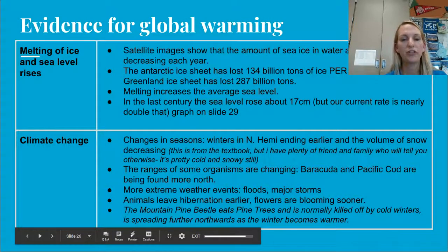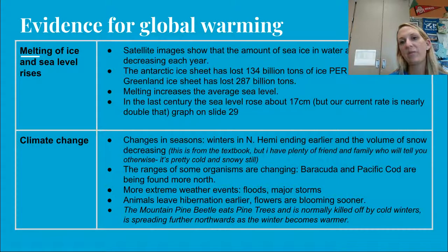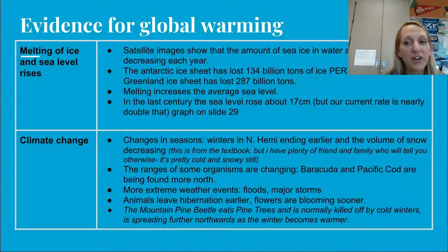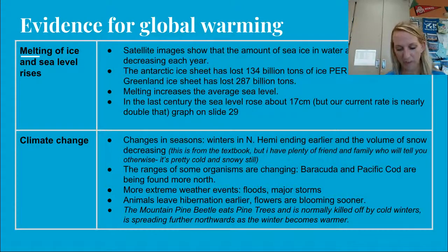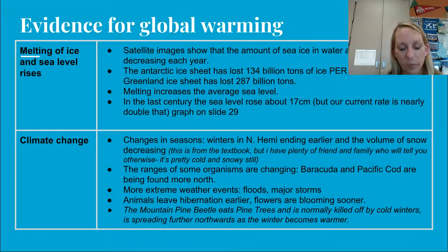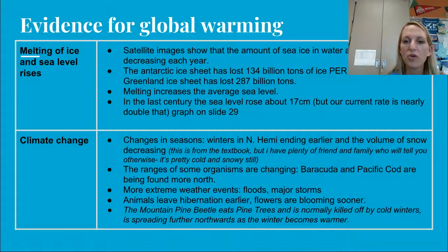The last evidence for global warming is climate change: winters in the Northern hemisphere are ending earlier, the volume of snow is decreasing, and the ranges of some organisms are changing. Barracuda and Pacific cod are being found further north as those areas warm. There are more extreme weather events — really strong storms, heavy flooding. Animals are leaving hibernation earlier and flowers are blooming sooner. The mountain pine beetle, normally killed off in cold winters, is spreading further northward as winters become warmer.